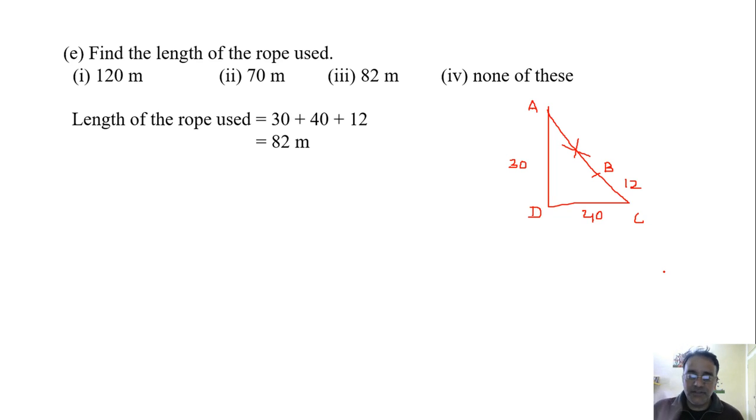Now see, in case study based questions, five questions are there. Five sub-questions are there. You have to attempt any four. Usually what I have seen that first, second, third, and fourth, or fifth, three or five attempt, fifth one is correct. Third one is wrong.